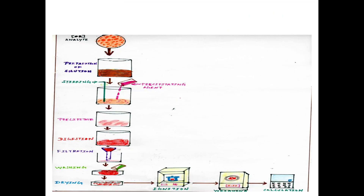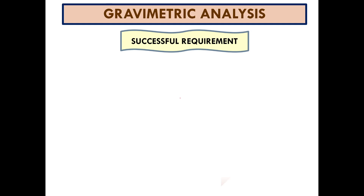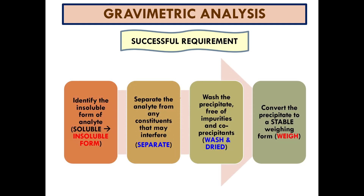This schematic diagram shows we start with the analyte and the last step is the calculation. The first successful requirement for gravimetry analysis is to identify the insoluble form of the analyte — the precipitate or the analyte in the solution. You need to identify what analyte is in the solution and what precipitate you will get at the end of the analysis, because if you know the analyte and the precipitate, you can use the calculation formula to calculate the amount of precipitate and the amount of analyte in the solution.